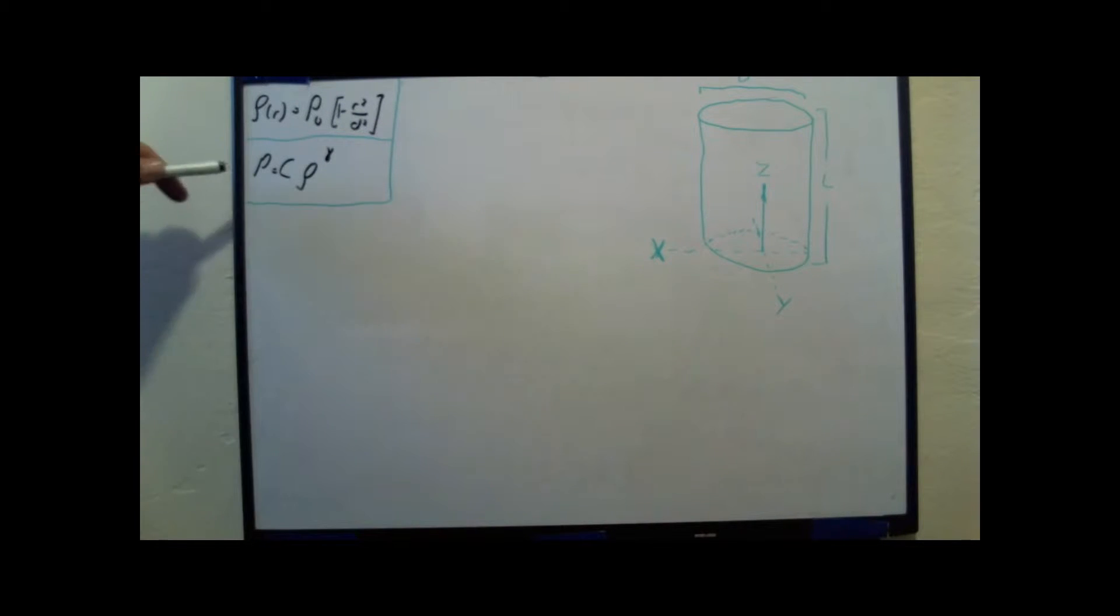First, we know that the pressure inside of the tank is equal to a constant times the rho to a power of gamma. We're also given that the profile of density is equal to this equation.